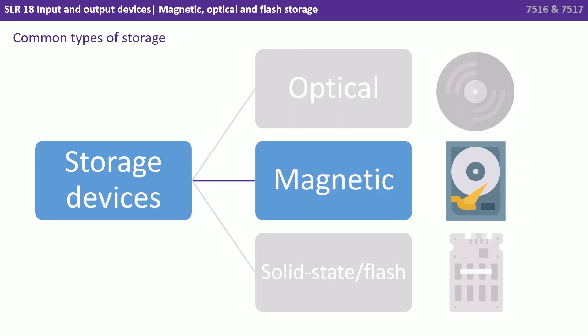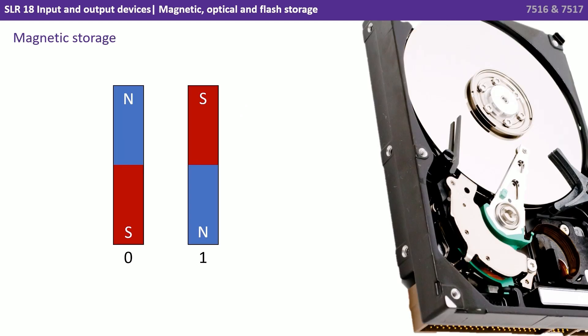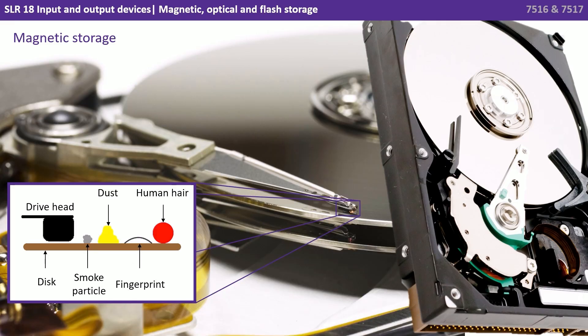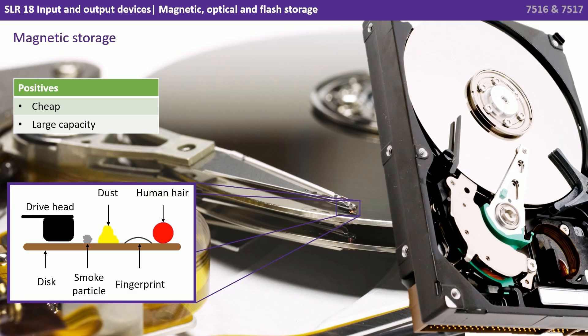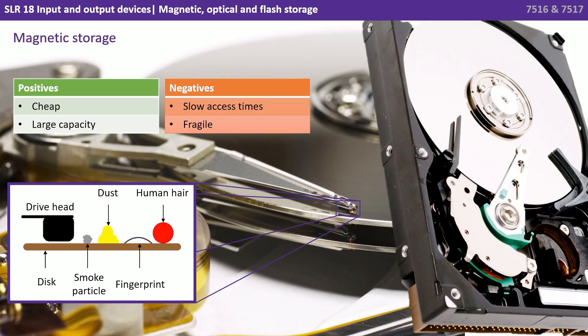Next we have magnetic storage devices. As the name suggests, these literally encode the binary ones and zeros using magnetic polarity — north and south — onto the surface of a metal disk which can be magnetized. The distance between the read-write head, which we can see in the photo here, and the surface of the magnetic disk is minuscule. You can see in this abstraction in the bottom left that even a smoke particle is far bigger than the gap between the read-write head and the surface of the disk platter. Magnetic storage is very cheap and has a large capacity, but again it has a slow access time and because of all these very delicate and highly tuned moving parts it's very fragile.